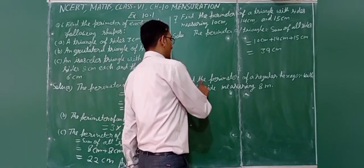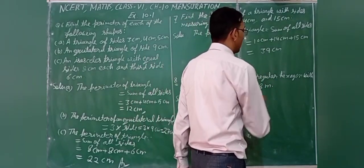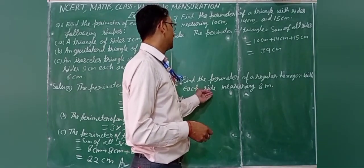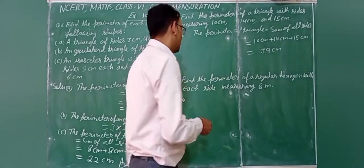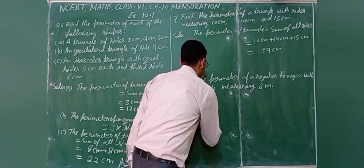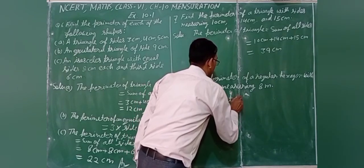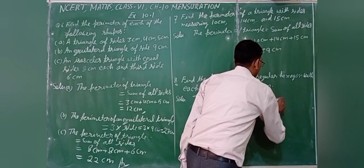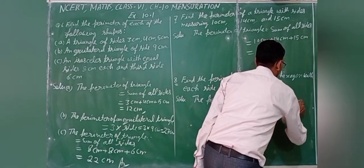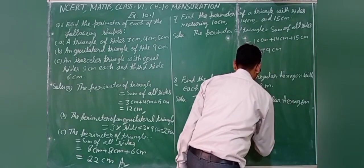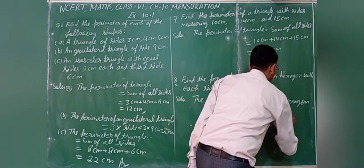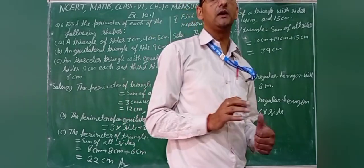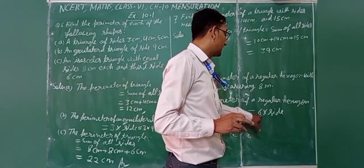Find the perimeter of a regular hexagon with each side measuring 8 meters. A hexagon has 6 sides. Perimeter = 6 into side = 6 into 8.